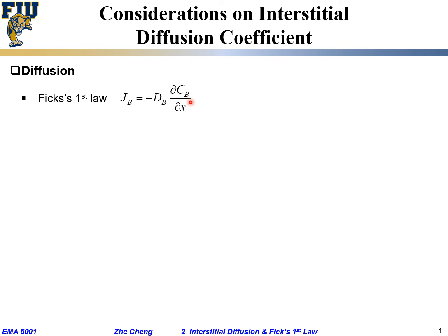This is our Fick's first law. We said the diffusion coefficient, in this case we've been talking about interstitial diffusion coefficient, we give it as D = (1/6)γα².